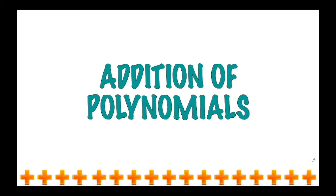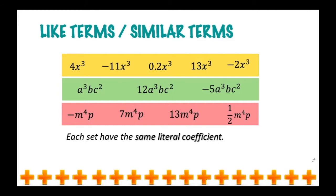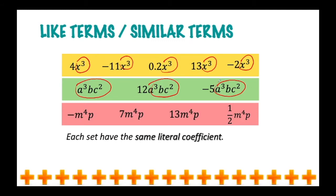These are terms that have the same literal coefficient. The polynomials that you can see on the screen now are grouped together according to their literal coefficients. The polynomials in the yellow group have the same literal coefficient xq. The polynomials in the green group have the same literal coefficient a cubed bc squared, and the polynomials in the pink group have the same literal coefficient m raised to 4p.